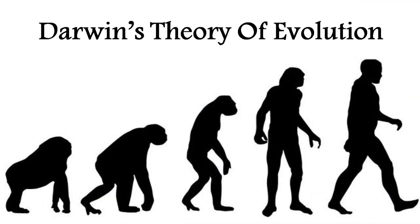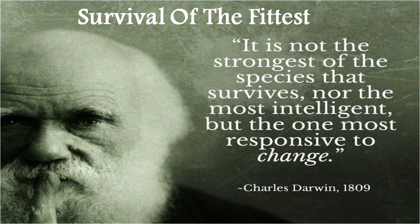Darwin's theory of evolution. Charles Darwin was a biologist who studied about various types of plants and animals and he suggested two principles that came to be known as Darwin's theory of evolution. The first principle is survival of the fittest. He stated that it is not the strongest or the most intelligent that survives, but the ones that are most responsive to the change. It is very important for an organism to change or adapt to its surrounding to survive.